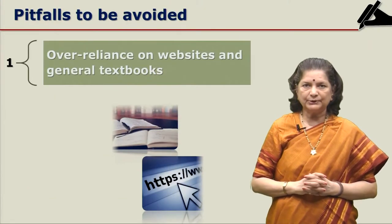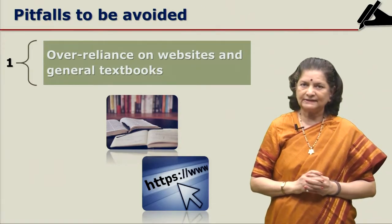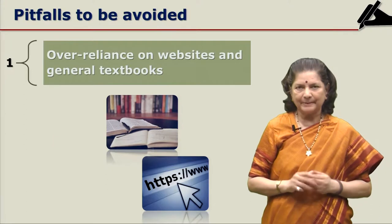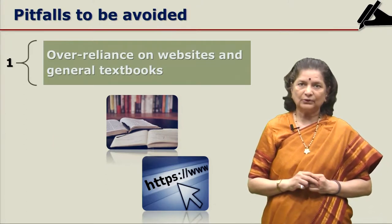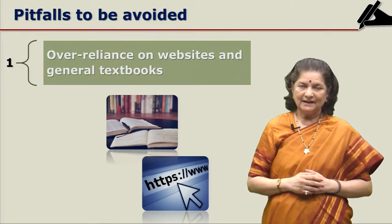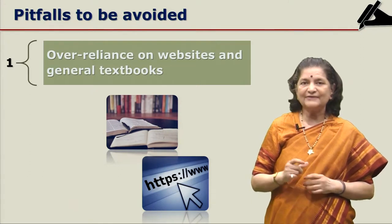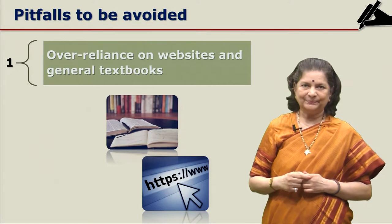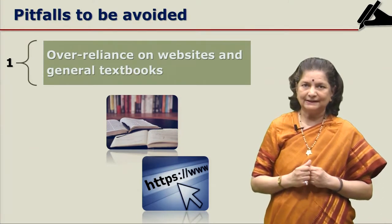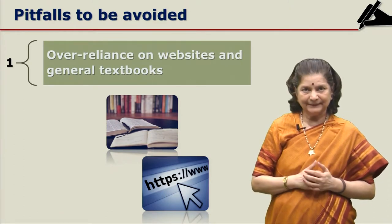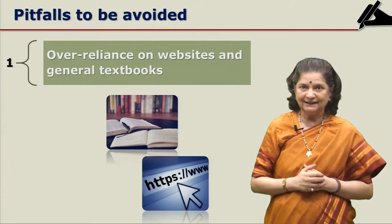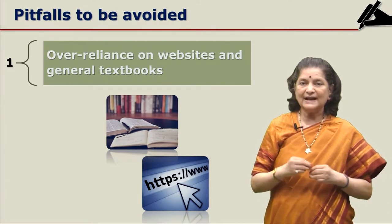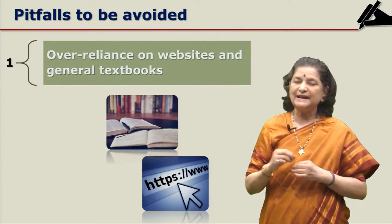The first pitfall to be avoided is over-reliance on web material and general textbooks. When you use material from the web, it is very necessary to check for authenticity and authority of the material. Check what the website is — is it an academic website or a government website? There should be authentication. Whatever material you are choosing from the net, the author should be an authority, and material by such authors can be chosen. So, over-reliance on the web requires that the web should be used very carefully.